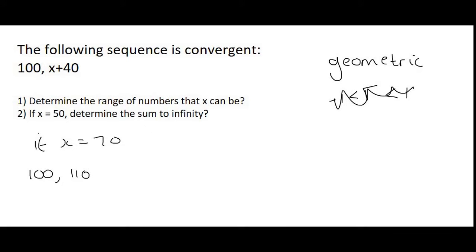So to get from 100 to 110 you would have to multiply by 1.1. And then if it's a geometric you would have to keep multiplying by 1.1 and so your numbers would get bigger and bigger and bigger. That would not be convergent.